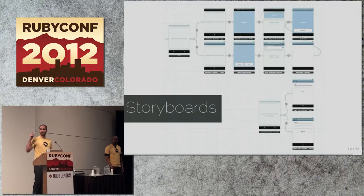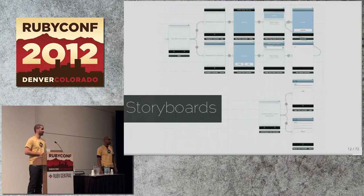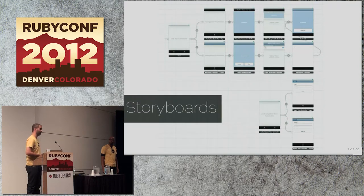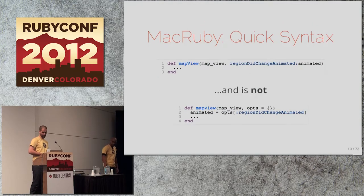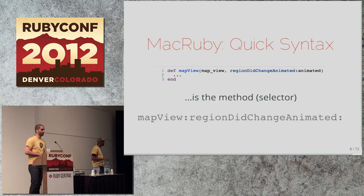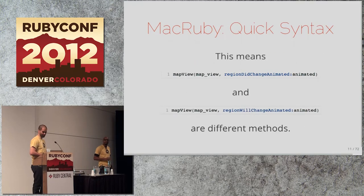The actual syntax difference with Ruby is in the method definition — when you say 'def whatever' and pass in the keyword inside the method definition, that's not legal Ruby. It is legal MacRuby, and that's what RubyMotion is based on. That 'regionDidChange animated:' bit — if you tried that in a normal Ruby 1.9.3 app it would have no idea what you're talking about.